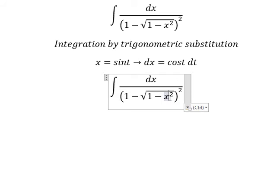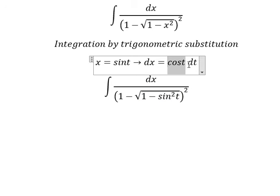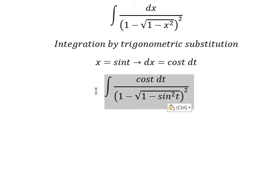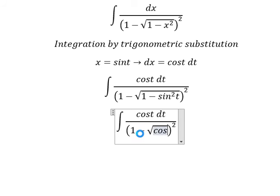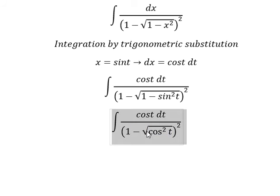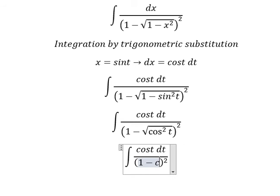So this term we change for sin(t), ds we change for cos(t) dt, and this term we change for cos²(t). The square root of cos²(t) gives us cos(t).